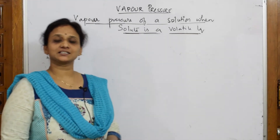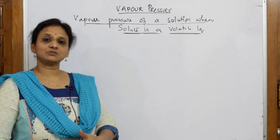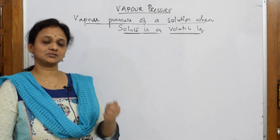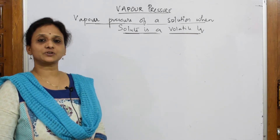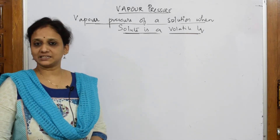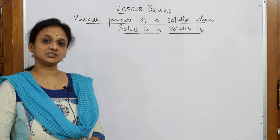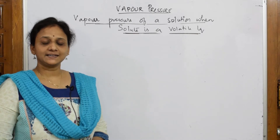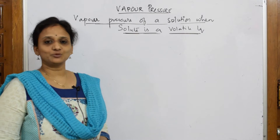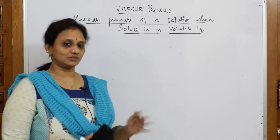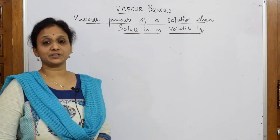Let us come back and start discussing the next topic of your chapter: solid solutions. Till now, we tried to learn the introduction, then gradually went into a concept called solubility, and the different types of solutions. Later on, I started with concentration units — we have done different numericals based on molarity, normality, mole fraction, and formality. After that, we came to the topic called vapor pressure.